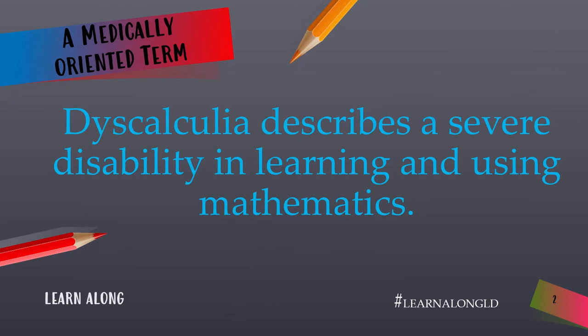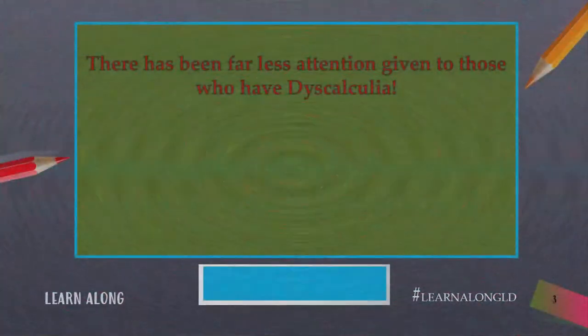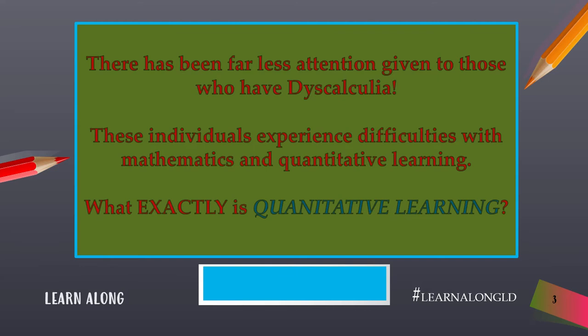A medically oriented term, dyscalculia describes a severe disability in learning and using mathematics. There has been far less attention given to those who have dyscalculia. These individuals experience difficulties with mathematics and quantitative learning.